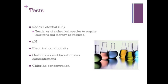Field measurements of redox potential were made at the time of water sampling. Redox potential is the tendency of a chemical species to acquire electrons and thereby be reduced. Each species has its own intrinsic reduction potential — the more positive the potential, the greater the species' affinity for electrons and tendency to be reduced, similar to pH but not exact. The carbonate and bicarbonate concentrations were measured by titration with a known volume of water against standard sulfuric acid using phenolphthalein and methyl red as indicators. The chloride concentration was measured by titrating a known volume against standard N/40 silver nitrate solution using potassium chromate as indicator.